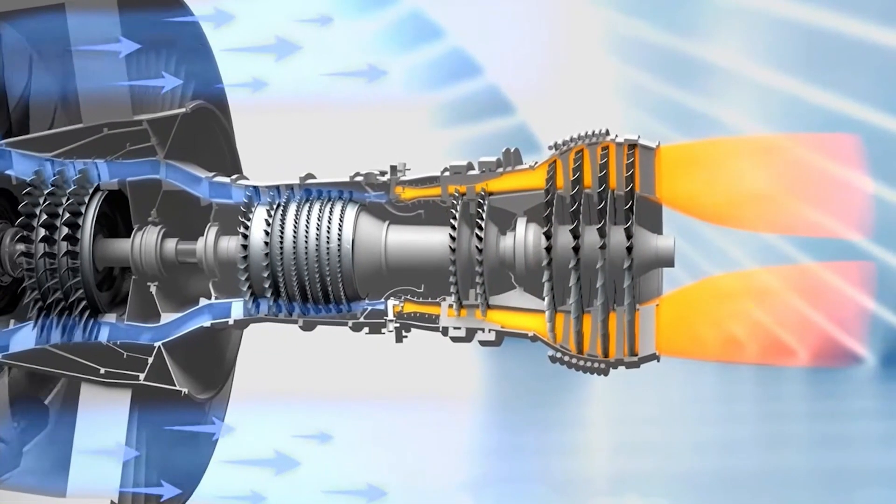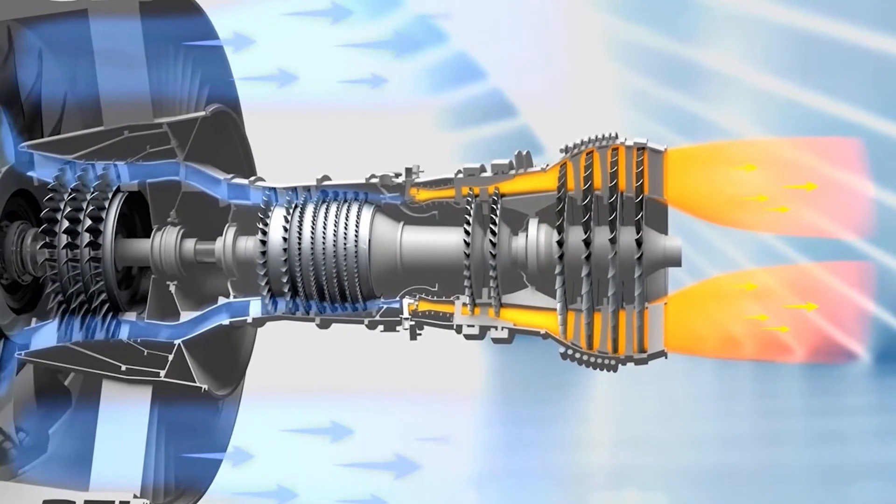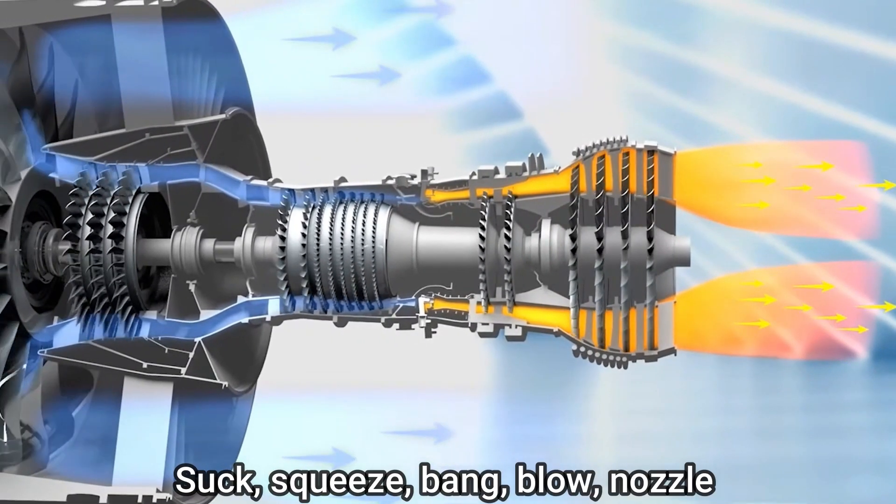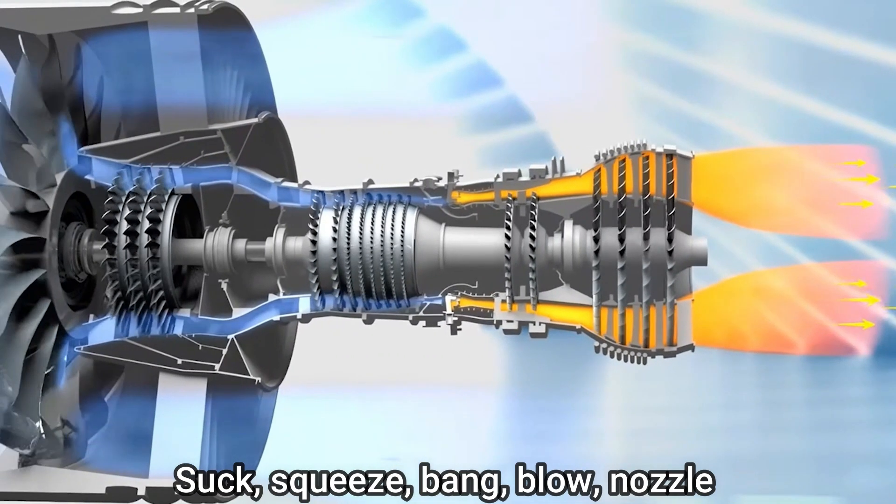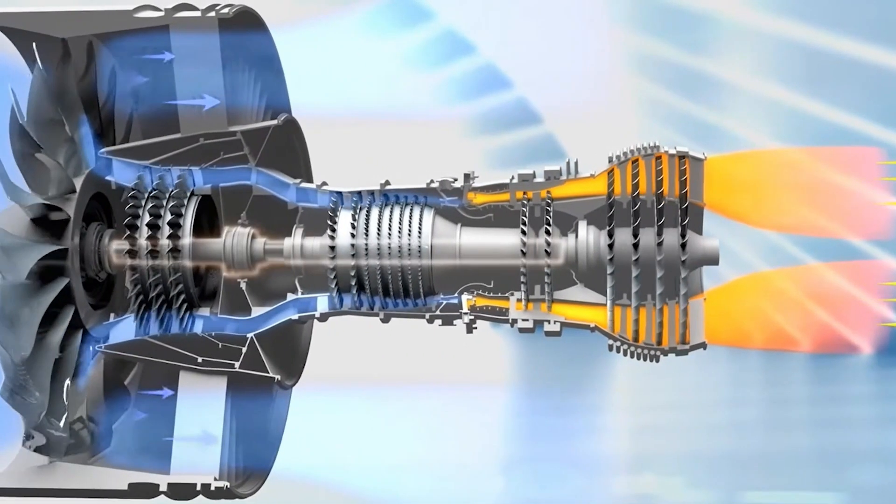At the simplest level, the way a jet engine works can be reduced to just five words: suck, squeeze, bang, blow, nozzle. Let's break down what that means.